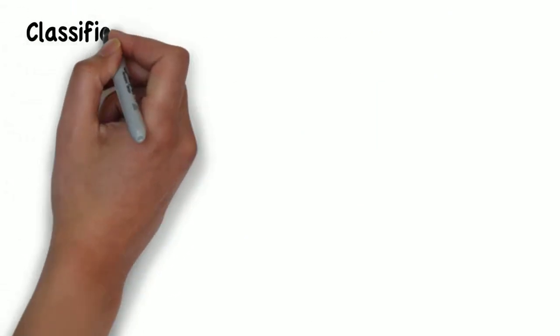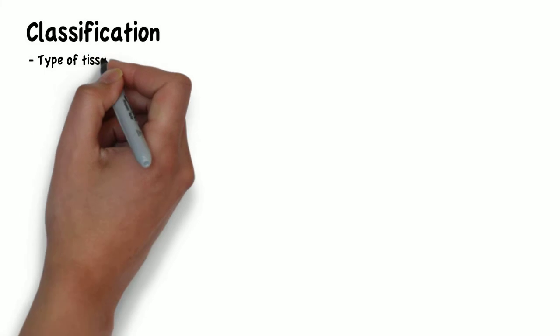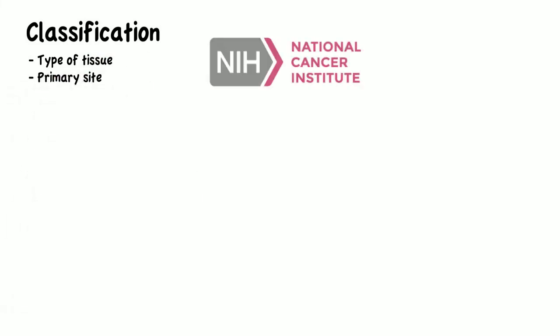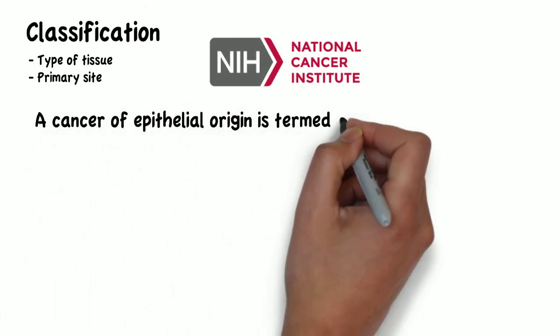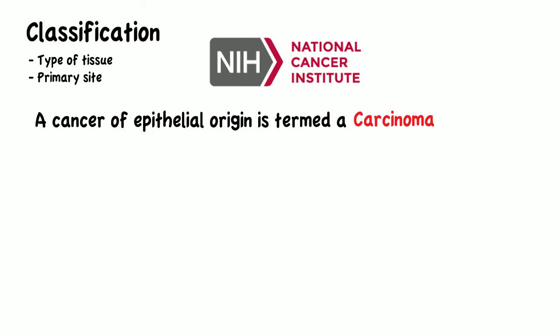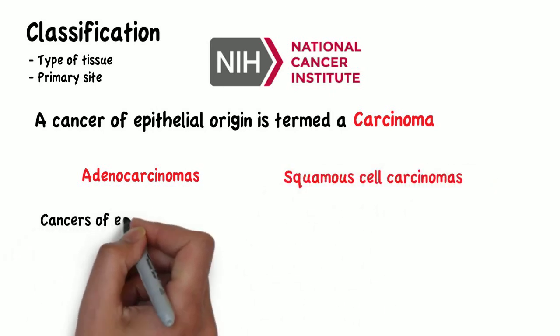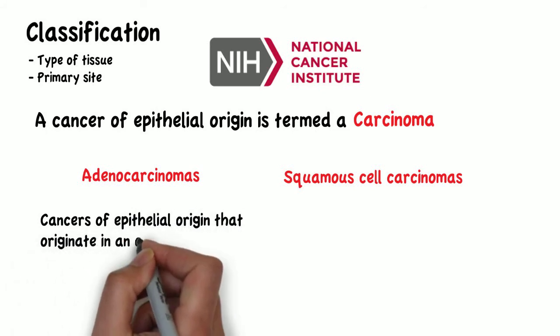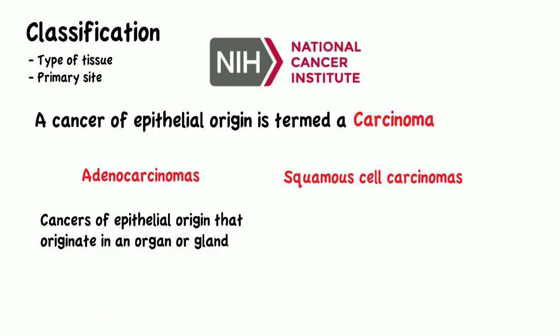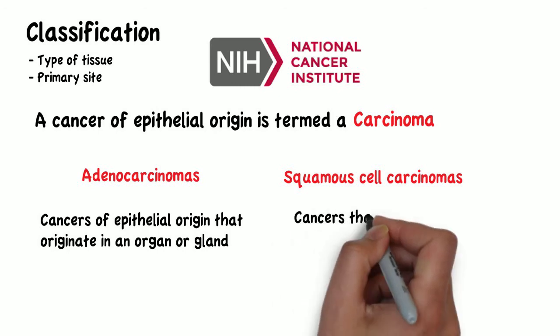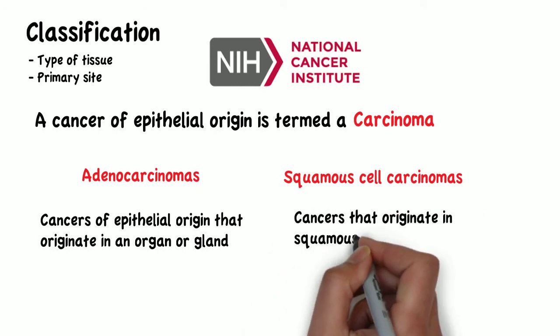Cancers are often classified by the type of tissue in which the cancer originates and by their primary site. According to the National Cancer Institute, a cancer of epithelial origin is termed a carcinoma. Carcinomas are divided into two major subtypes: adenocarcinomas and squamous cell carcinomas. Adenocarcinomas are cancers of epithelial origin that originate in an organ or gland, and squamous cell carcinomas are cancers that originate in squamous epithelium.